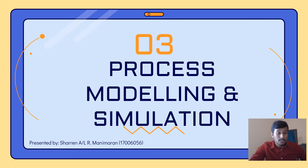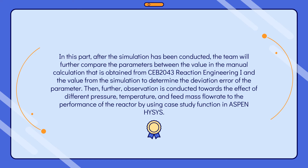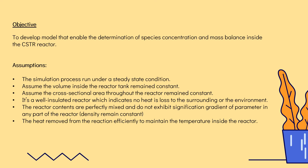Hello everyone, I'm Sharon from group 17. Today I'm going to present one of the main topics in our integrated project, which is Process Modeling and Simulation. In this part, after simulation has been conducted, the team will compare parameters between the values from manual calculation obtained from Reaction Engineering 1 and the simulation values to determine the deviation error. The objective is to develop a model that enables the determination of species concentration and mass balance inside the CSTR2 reactor.